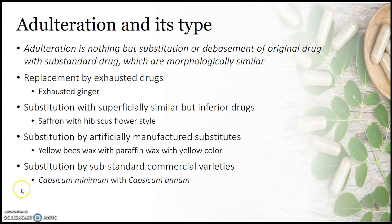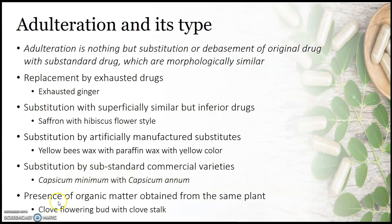The fourth type is substitution by substandard commercial varieties. Capsicum minimum is a very pungent capsicum containing the highest amount of pungent principle compared to Capsicum annuum. However, they look similar, so replacement of Capsicum minimum with Capsicum annuum falls under adulteration by substandard commercial variety.